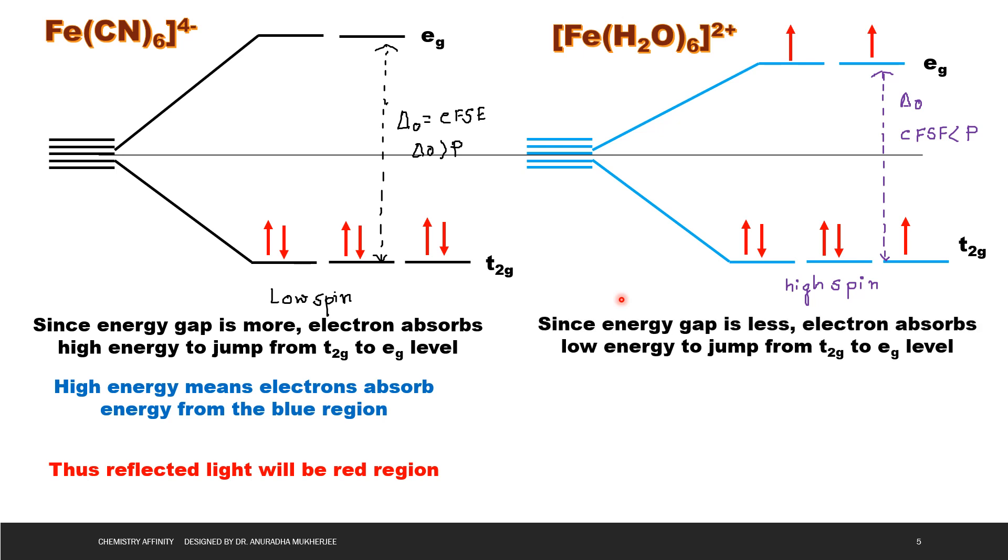Fe(H2O)6 2+ is a high spin complex. Since energy gap is less, electron absorbs low energy to jump from T2G to EG level. Low energy means electron absorbs energy from the red region. So reflected light will be blue region. That means color of this complex will be blue to purple.